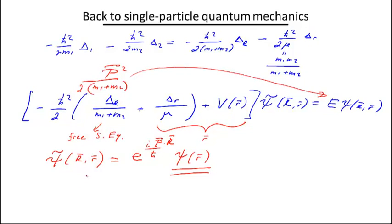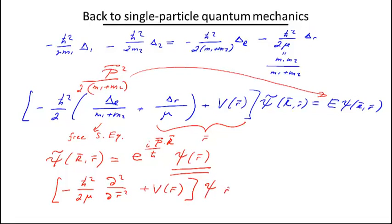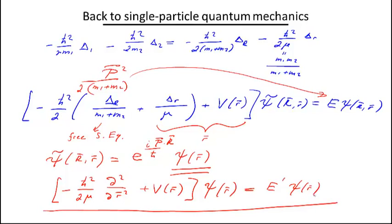The final reduced equation is: [−(ħ²/2μ)∇² + V(r)] ψ(r) = E' ψ(r), where E' = E − P²/2(M1+M2). This looks exactly like a single-particle Schrödinger equation — the wave function depends on only one coordinate — with the only difference being the reduced mass μ.